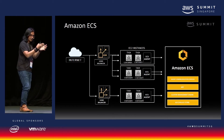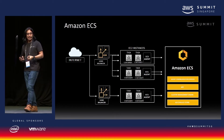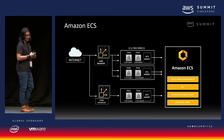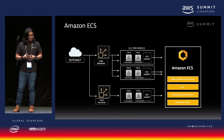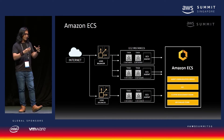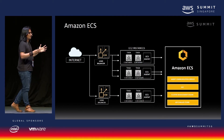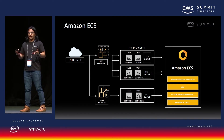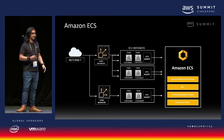In each EC2 instance running your container applications, there are ECS agents that help manage the engine. It can also have a key-value store, and there's integration with the load balancer. When it comes to Amazon ECS, you'll find it has everything built in that you need to scale containerized applications using Docker.